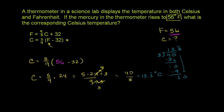Or you could say that 3 goes into 40 thirteen times with a remainder of 1. So this is also equal to 13 and 1 third degrees Celsius. Either way it works — that's our Celsius temperature when our Fahrenheit temperature is 56 degrees.